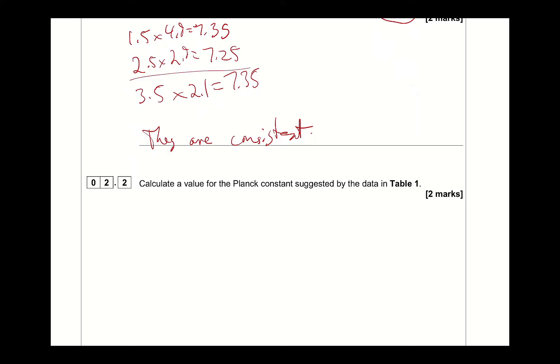So you're going to go to your formula sheet for this one here to calculate the Planck constant. Lambda is h over mv, so h is lambda mv.